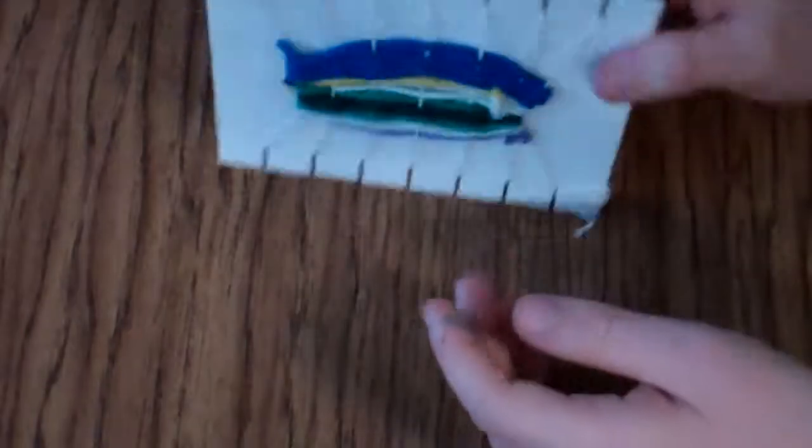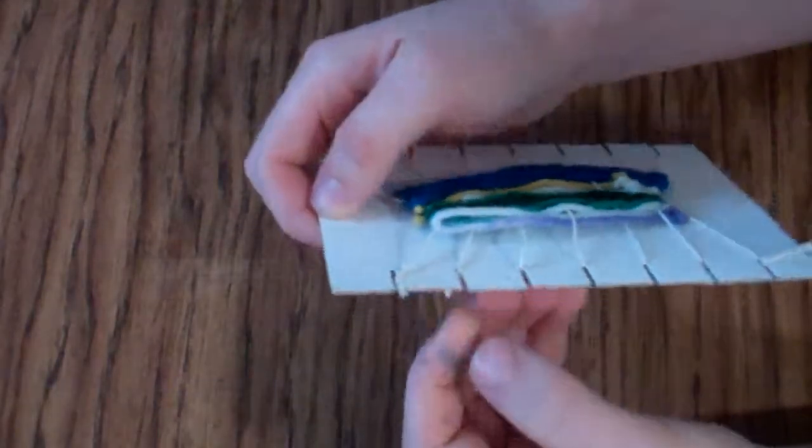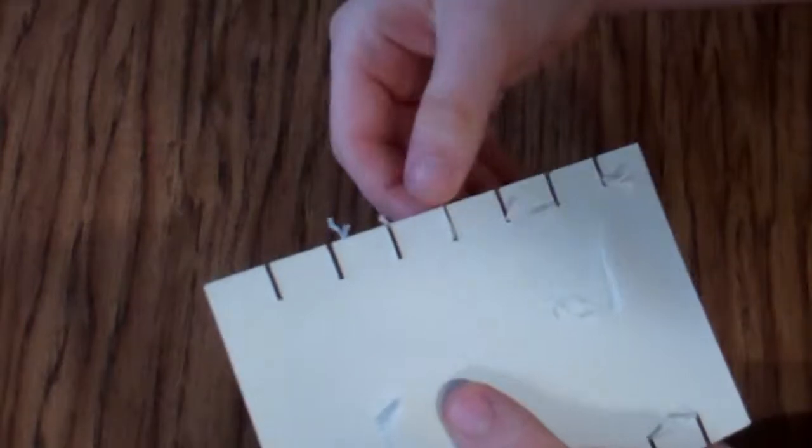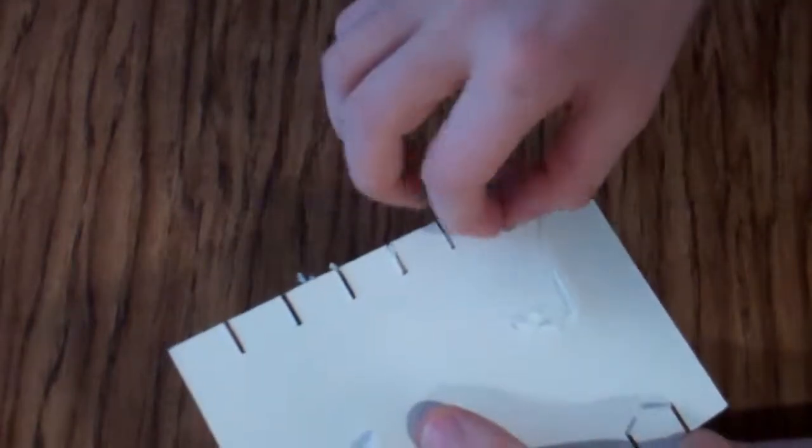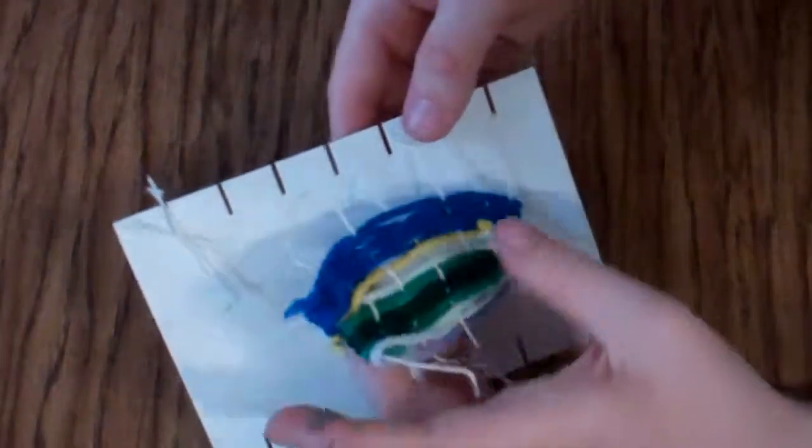Then carefully you're going to turn it over. You're going to carefully take those strings. Actually I can do it from the backside. I'm going to take those strings out of the notches. I just want to make sure none of them are caught. Sometimes they get caught.